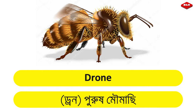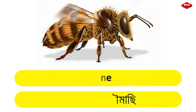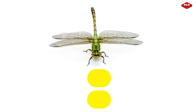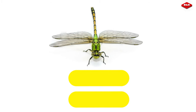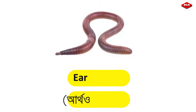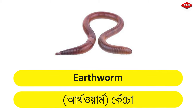Drone – Purush Machi. Dragonfly – Thoring. Earthworm – Kecho.